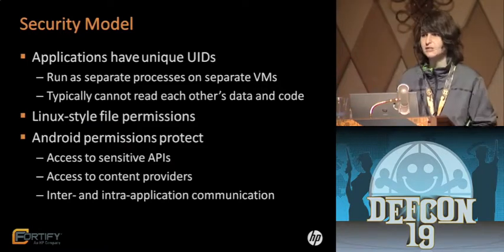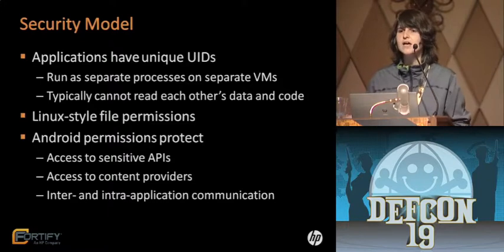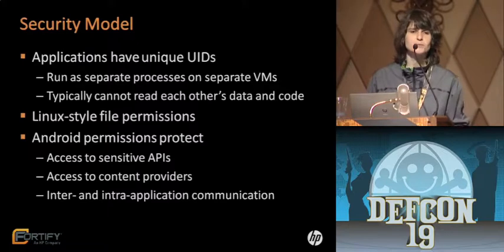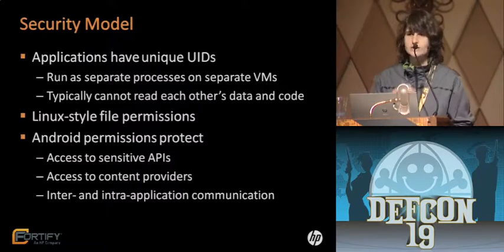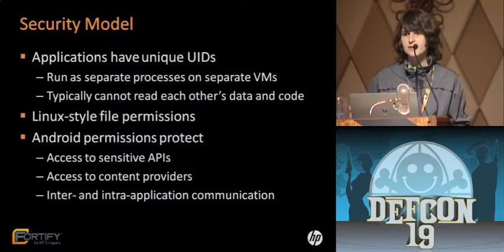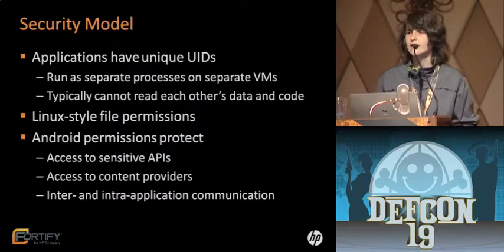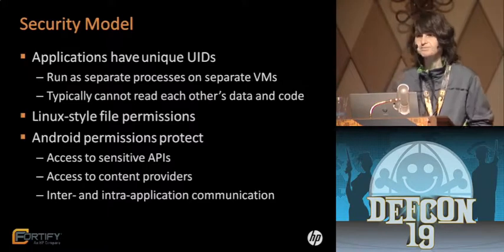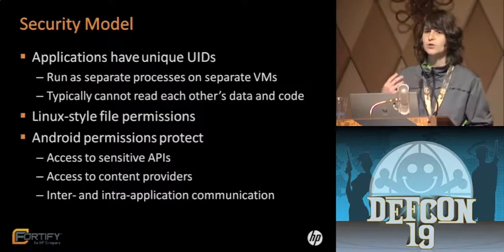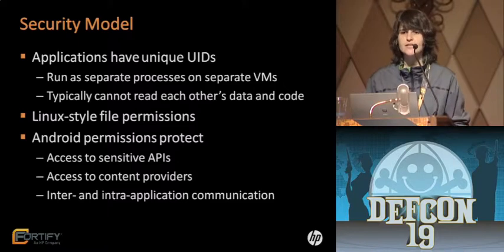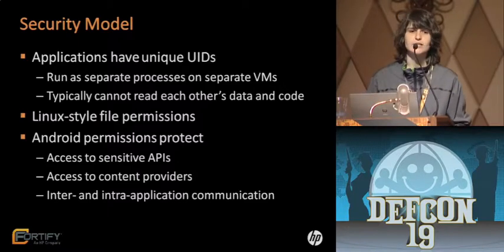Because the platform is built on top of Linux, Linux file permissions apply. But what's specific to Android is its whole system of permissions provided by Google. Permissions allow you to protect access to sensitive APIs — things like location services, network, Wi-Fi, Bluetooth, etc. The permission system also protects access to content providers, which are basically databases, and protects inter- and intra-application communication. Permissions are requested at install time, granted or denied at install time, and then enforced at runtime.